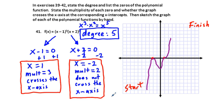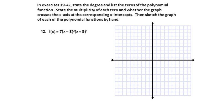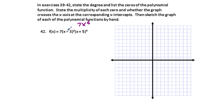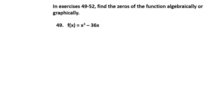For problem 42, the same type of analysis applies. The leading coefficient is going to be 7, and the degree is x to the 6th power — combining x squared from the left term and x to the 4th from the right. Since it's even positive, the graph will start up in quadrant 2 and finish up in quadrant 1, bouncing off the x-axis a couple of times.